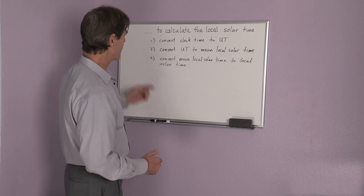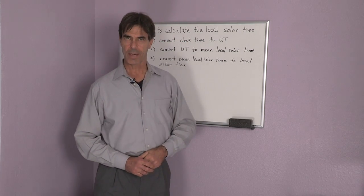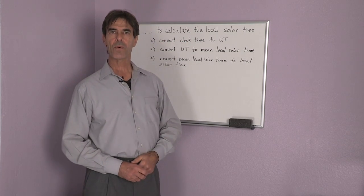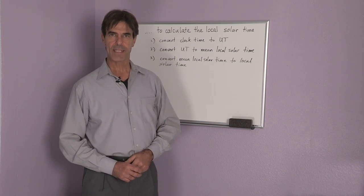And there's four steps. You first convert the clock time to something called universal time. In Pasadena, California, we're in Pacific standard time or Pacific daylight time.